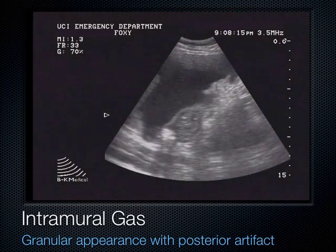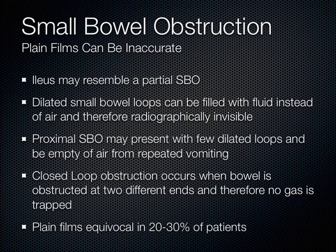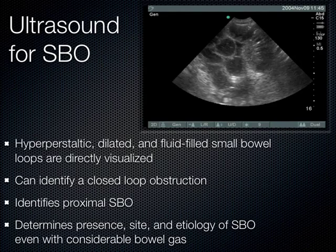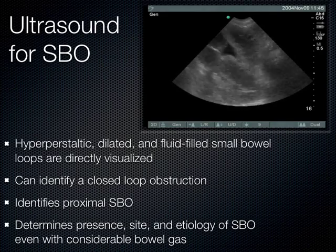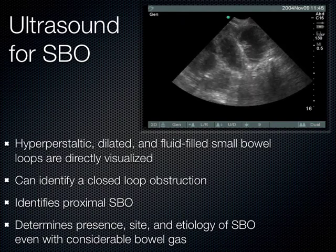Switching to small bowel obstruction — a very common emergency. Plain films can be inaccurate up to about 30% of the time in somebody with a full-blown small bowel obstruction. Ultrasound may be the way to go while waiting for the definitive test — a CT scan. Ultrasound falls between x-ray and CT in its test characteristics.